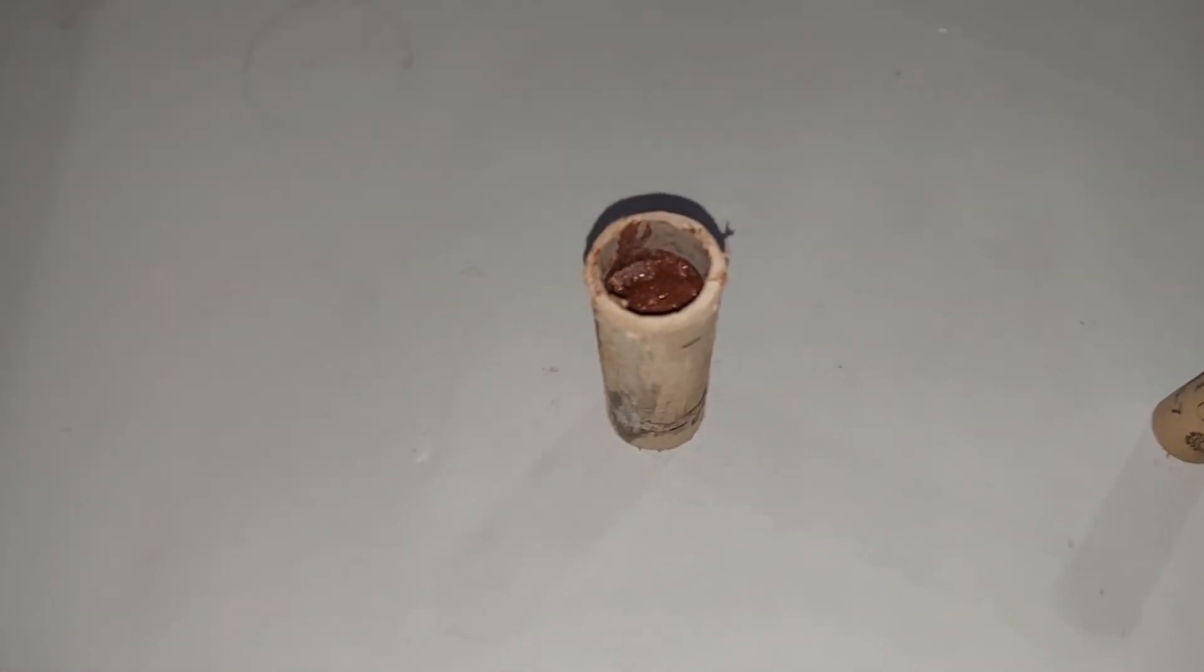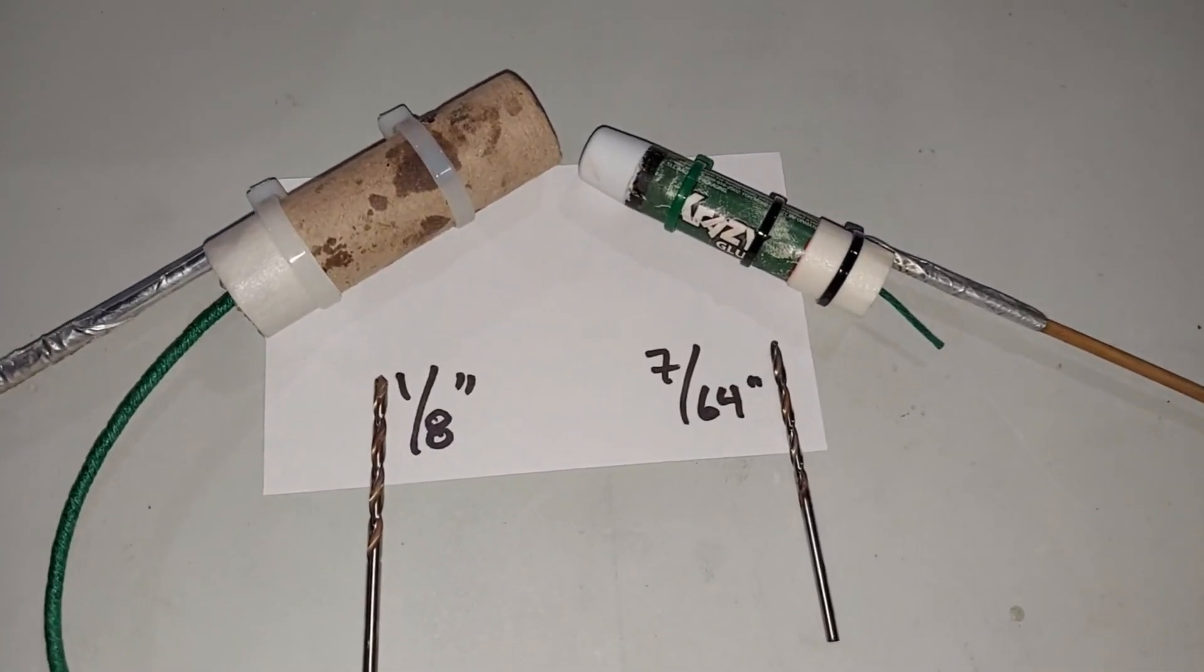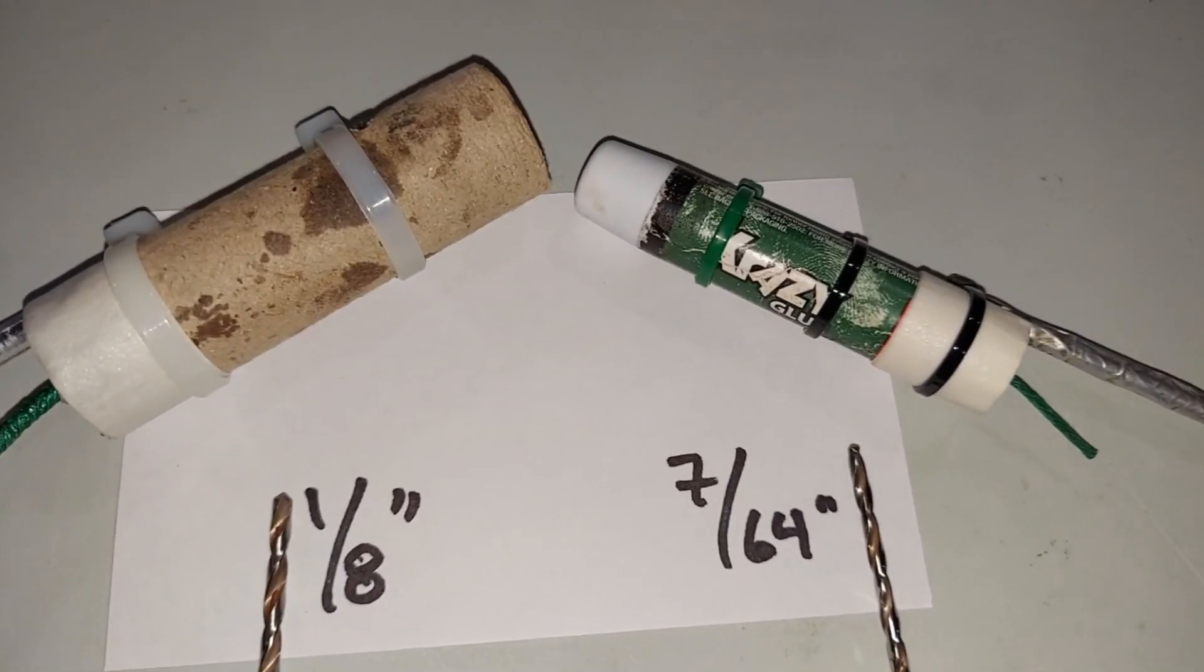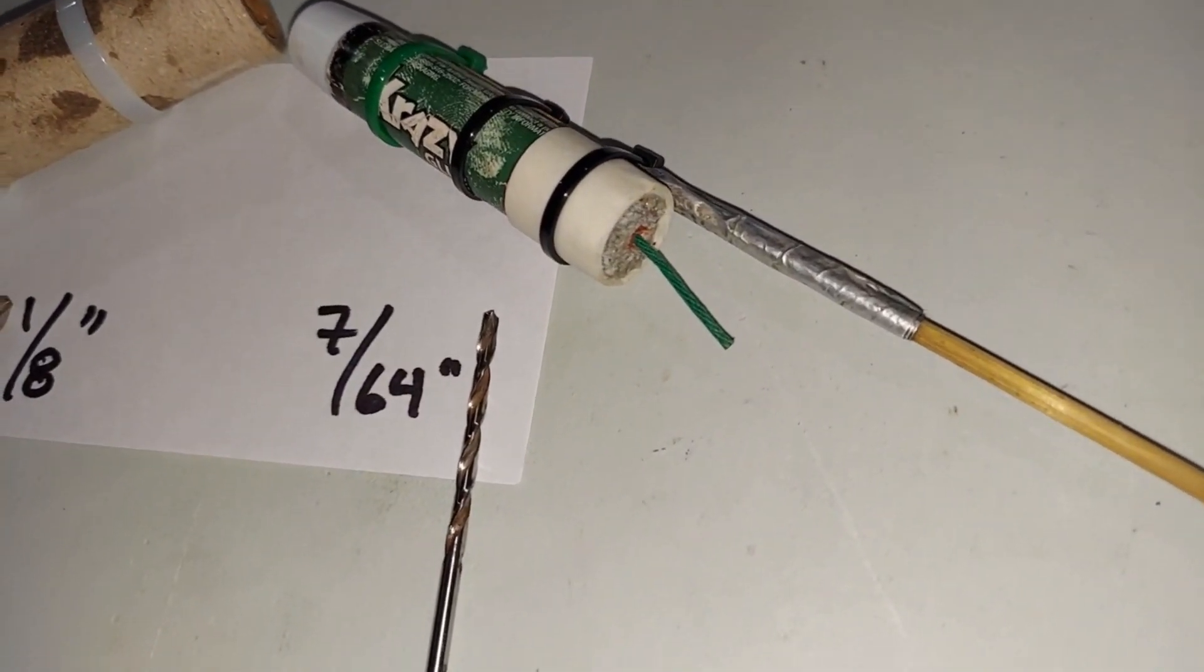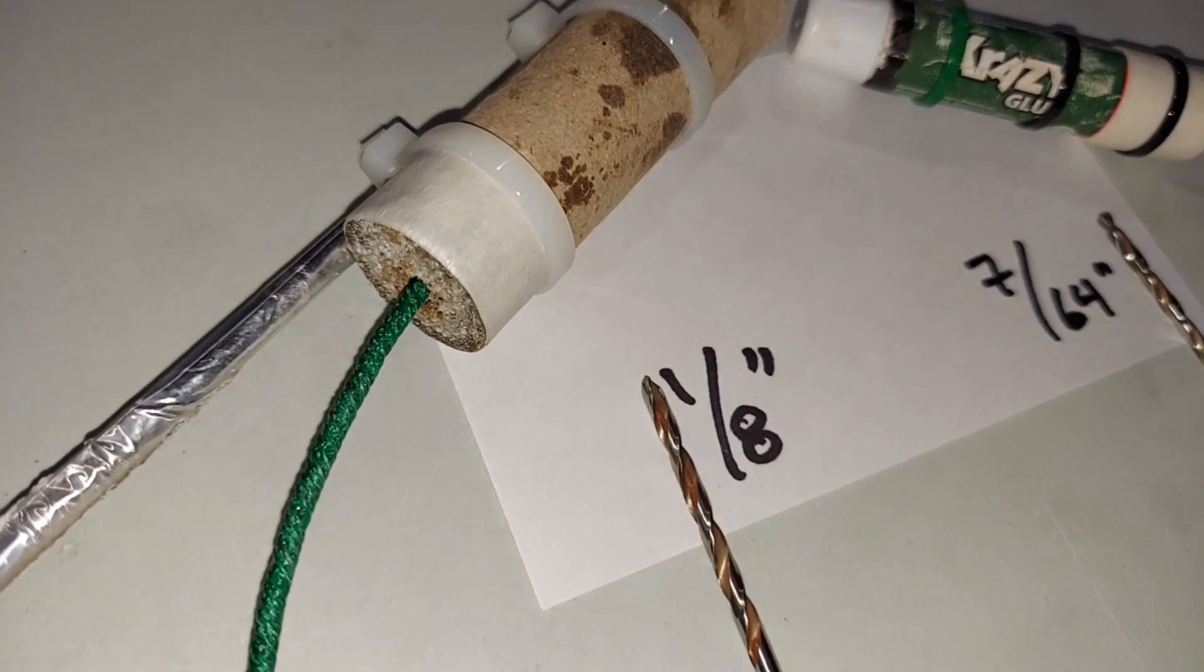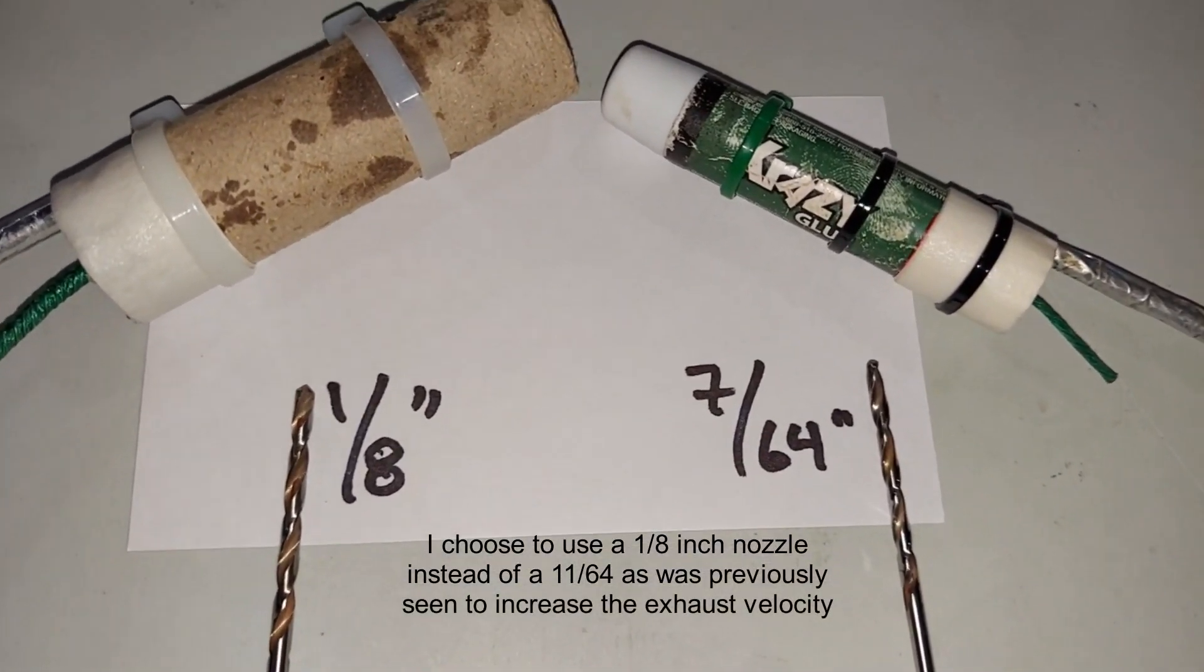So I finished filling this one as you saw and I scraped off the stuff that got stuck on the outside, so it needs a nozzle but otherwise it's going to be set here. I had enough of the rocket fuel left to fill this crazy glue container, I've always wanted to try that.